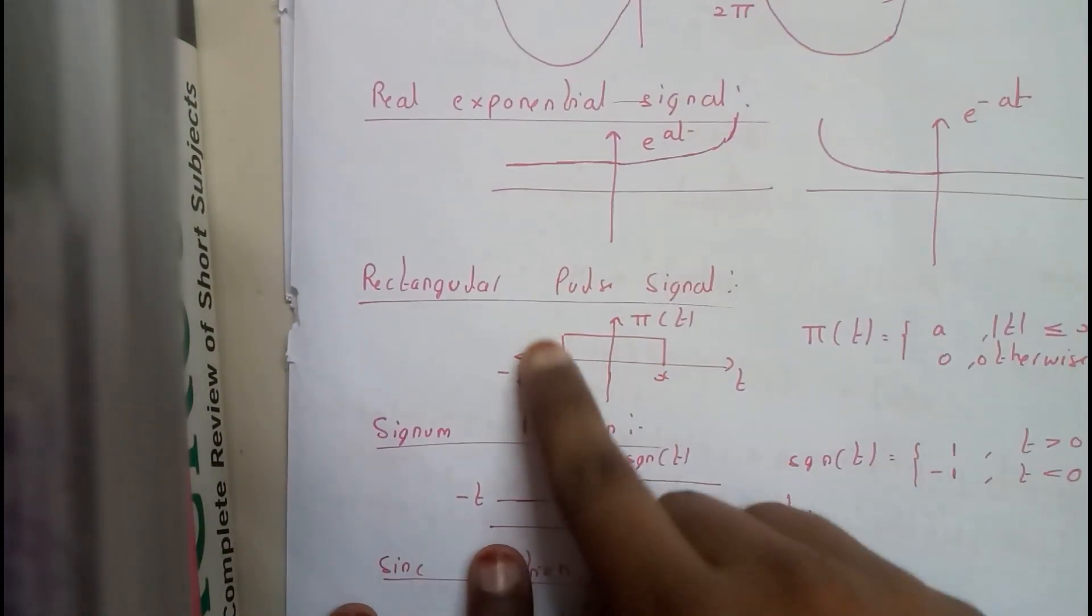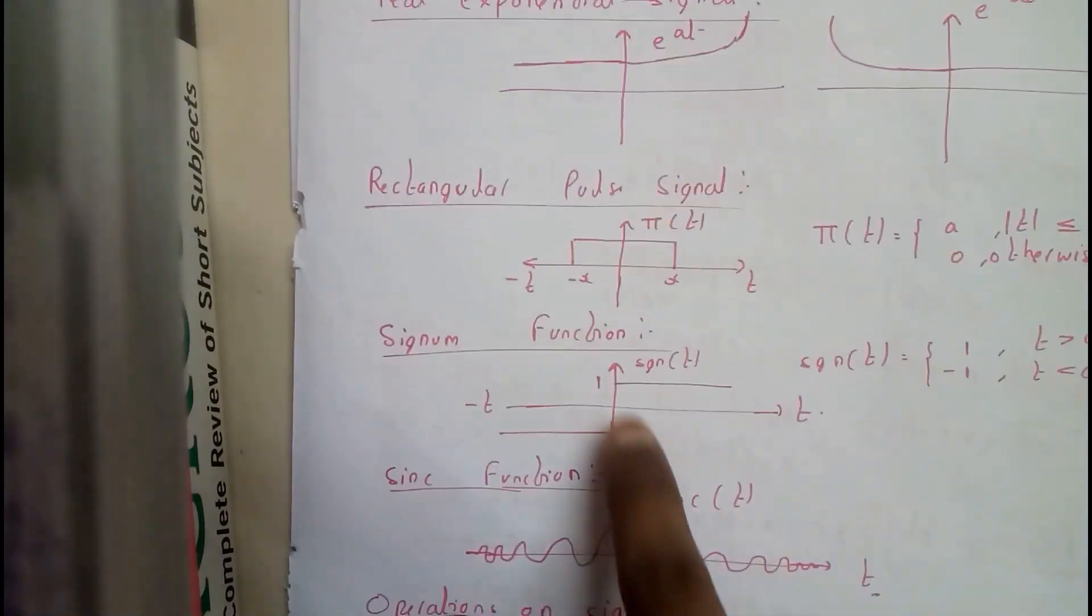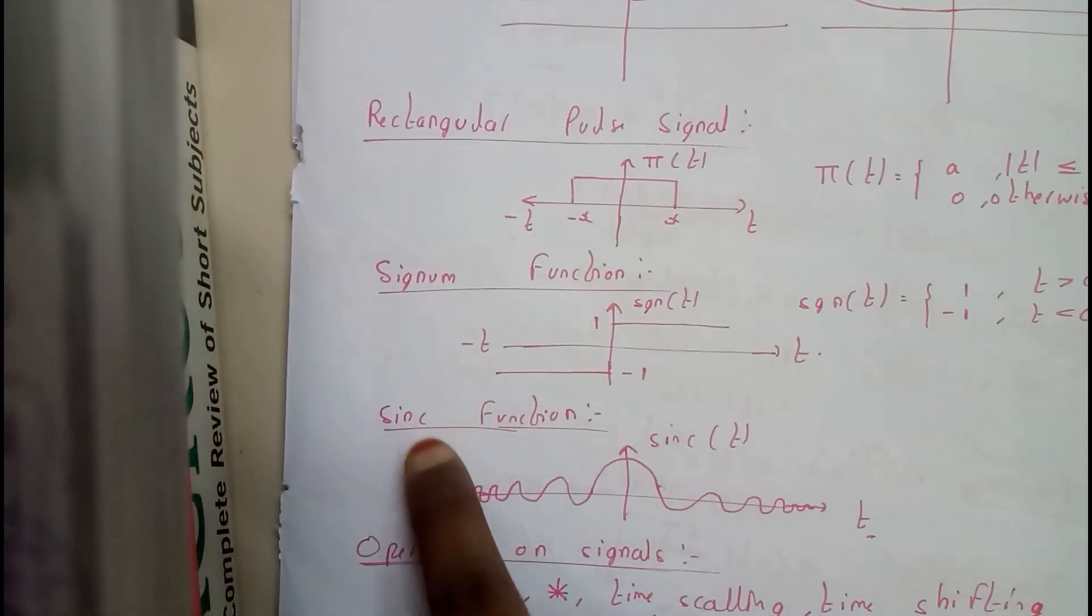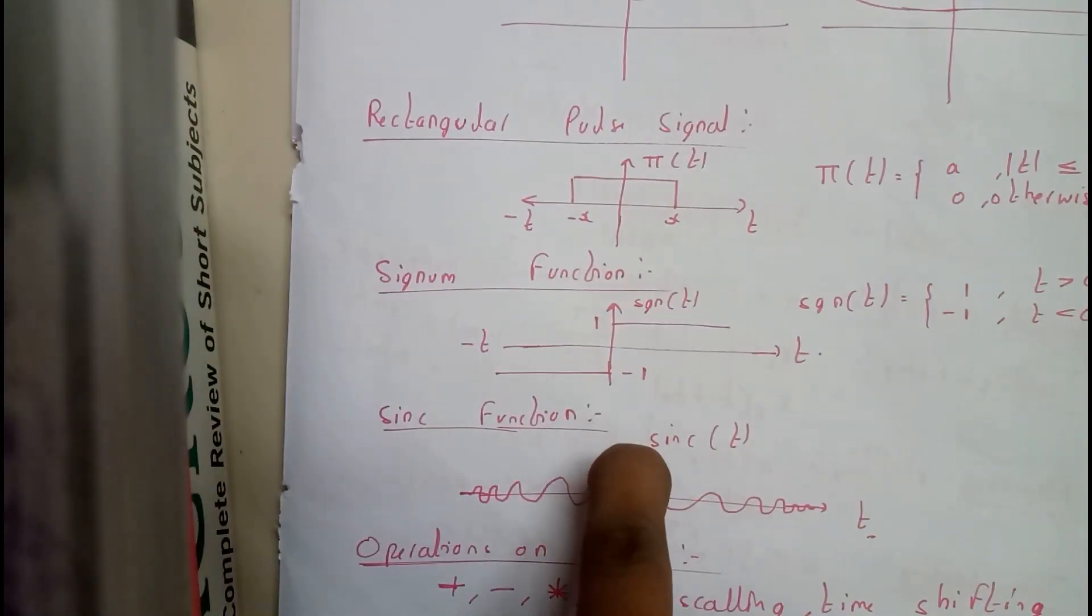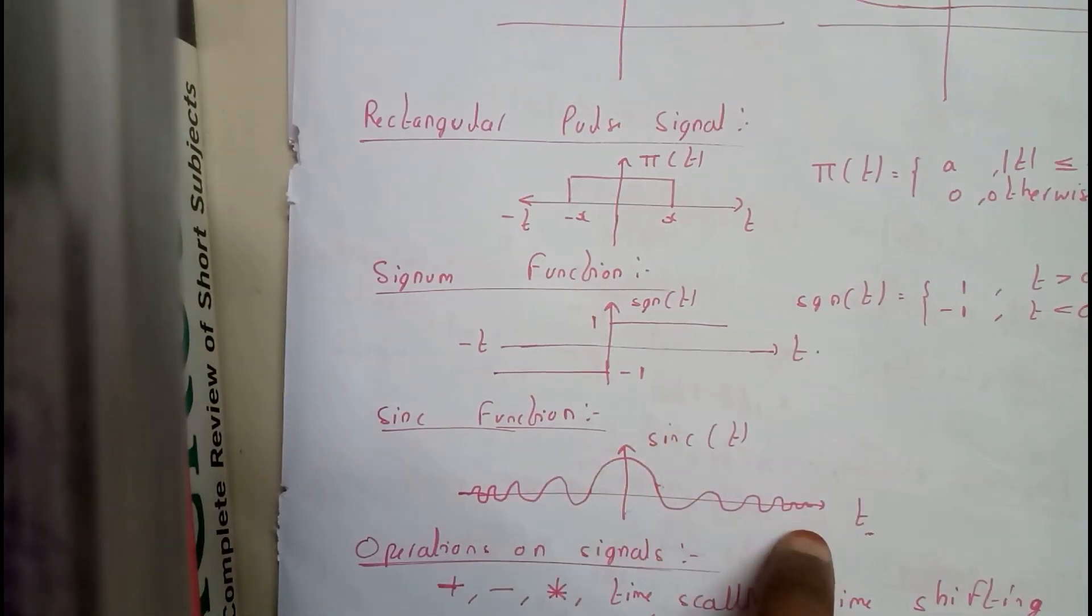Rectangular pulse, signum function, and sinc function - at the center it will be maximum, and at infinity and minus infinity it will become 0.